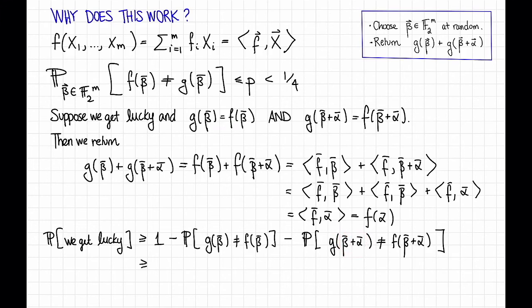So the probability that we get lucky is greater than or equal to 1 minus 2p, and in particular, the failure probability is at most 2p, which is what we claimed.